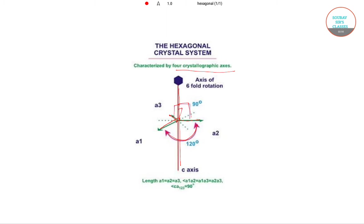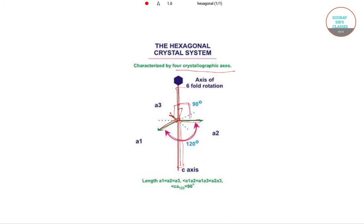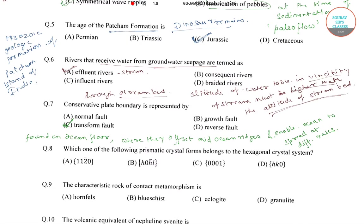So it has four crystallographic axes: three equal horizontal or equilateral axes at 120 degrees to each other, and one vertical axis perpendicular to the other three. This vertical axis can be longer or shorter than the horizontal axes. Among the options, the form denoted by 1120 belongs to the hexagonal crystal system, so the correct answer of question number 8 is option A.